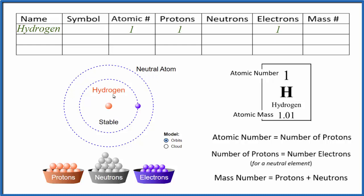So in our table, we should put one electron for hydrogen. So far, we know hydrogen has one proton and one electron.